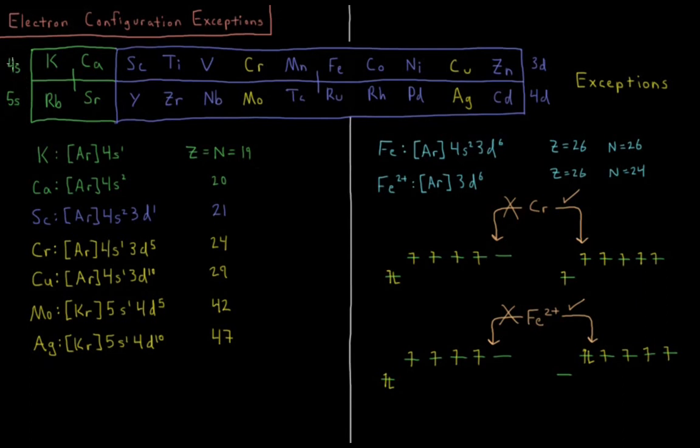If we look at the 4s and 5s levels of the periodic table, which are immediately followed by the 3d and 4d subshells, we're going to notice some exceptions to the standard way that we've been ordering our electron configurations thus far. For potassium, that's argon-4s1, the nucleus has 19 protons, there are 19 electrons. Calcium is argon-4s2, 20 electrons and protons.